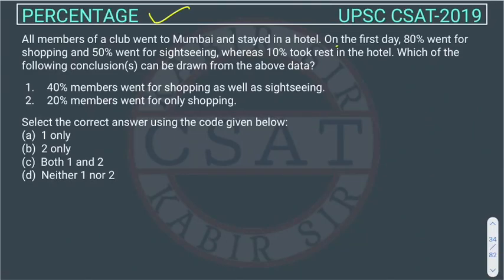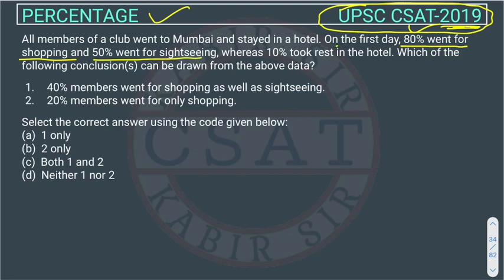This is a percentage question asked in the UPSC Civil Services CSAT exam 2019. All the members of a club went to Mumbai and stayed in a hotel. On the first day, 80% went for shopping, 50% went for sightseeing, and 10% took rest in the hotel. Which of the following conclusions can be drawn from the above data?